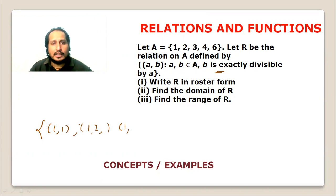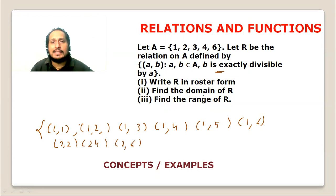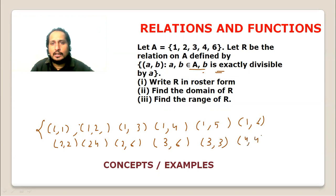So (1,3), (1,4), (1,5), (1,6) — in all cases b is exactly divisible by a. And (2,2), (2,4), (2,6) because b is exactly divisible by a. (2,3) no. (3,3), (3,6). (4,4) only. And (6,6).